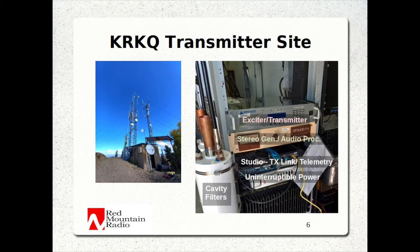Here's how all of these components look in the equipment rack at our KRKQ transmitter site, which is located at 11,000 foot elevation just outside of Telluride, Colorado. On the rack shown at the right, you'll see the exciter-transmitter unit above, underneath is the OptiMod audio signal processor and stereo generator, and below that is equipment to deliver uninterruptible power in the event of a power failure, along with the equipment providing an audio link from our studio to this remote transmitter site. To prevent power from other transmitters at other frequencies from getting into our transmitter, we also have cavity filters in line with the transmitter tuned to our carrier frequency of 95.5 MHz.